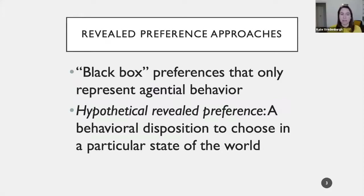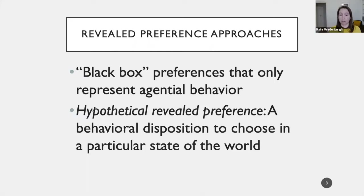Against this background about explanation in the social sciences, so-called revealed preference approaches in economics can look very puzzling. Revealed preference approaches black-box preferences such that they only represent agential behavior as contributing to choice, rather than the psychological determinants thereof. We get models which purport not to represent any human psychology and yet also purport to be descriptively and predictively fruitful. In particular, I want to look at hypothetical revealed preferences — a behavioral disposition to choose in a particular state of the world. These hypothetical revealed preferences don't just summarize information about agents' actual choices; they also state what agents would choose under a variety of counterfactual circumstances.